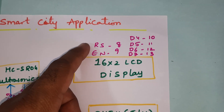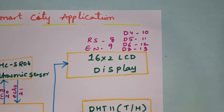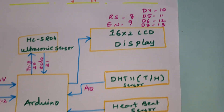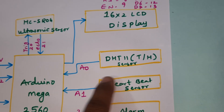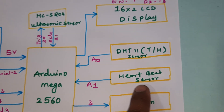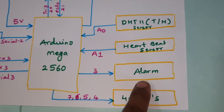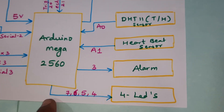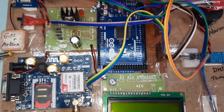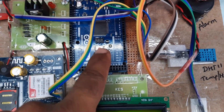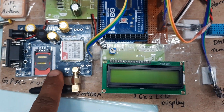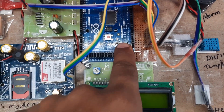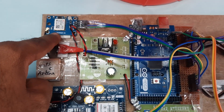A 16x2 LCD display is connected to RS, Enable, D4, D5, D6, D7 on pins 8, 9, 10, 11, 12, 13. A DHT11 temperature and humidity sensor is connected to analog A0, a heartbeat sensor to analog A1, and alarm and LEDs are connected to pins 7, 6, 5, 4. Serial communication uses RX3/TX3 for the GSM module and RX2/TX2 for the GPS module.